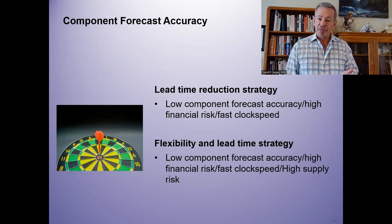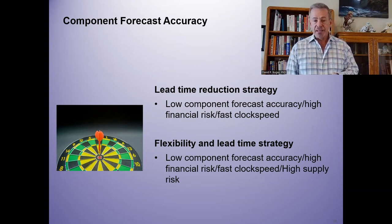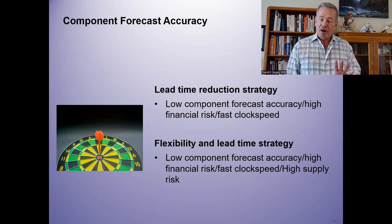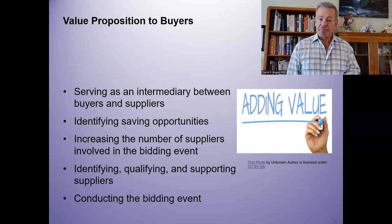Have a low component forecast accuracy and high financial risk with fast clock speed — that's always a big deal. And then have a flexibility and lead time strategy where you have low component forecast accuracy, high financial risk, and fast clock speed. All the iterations you have at each one of these is going to play a role because we're thinking big picture here — what you should outsource and what you shouldn't.